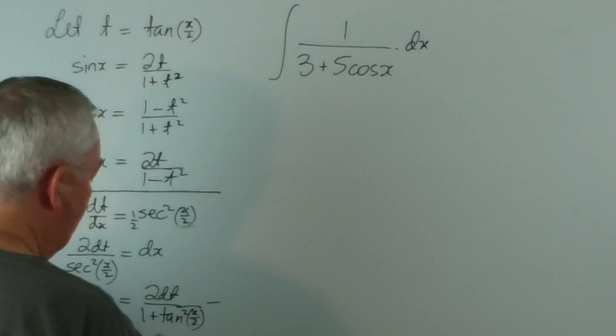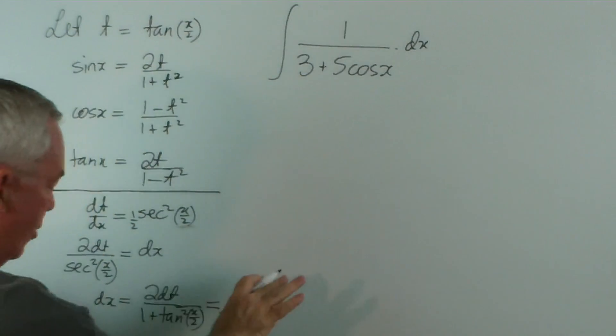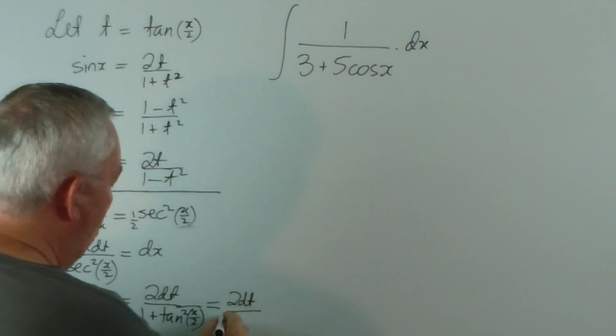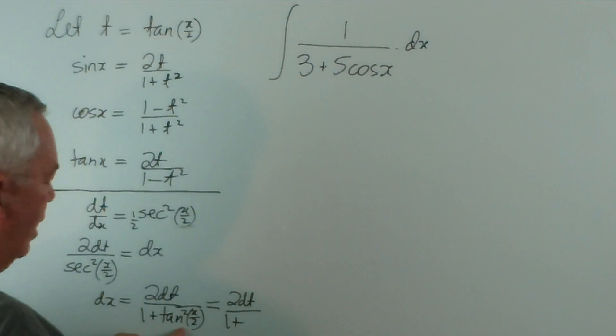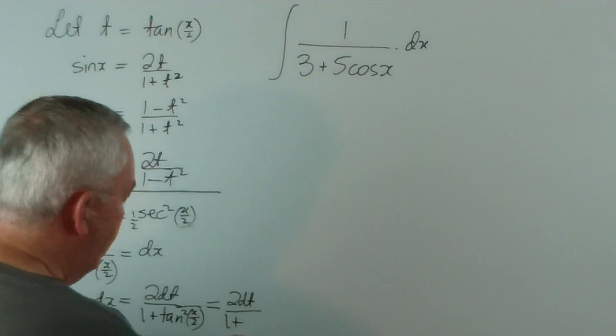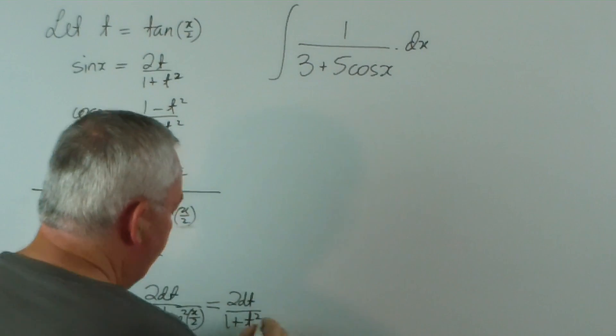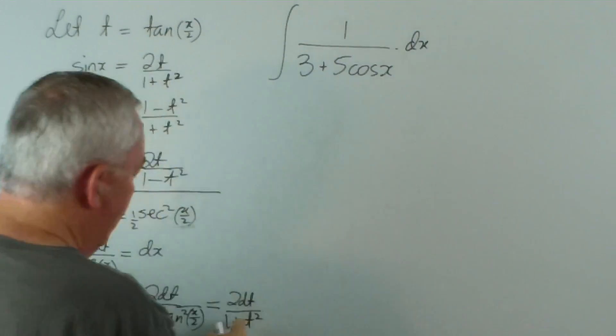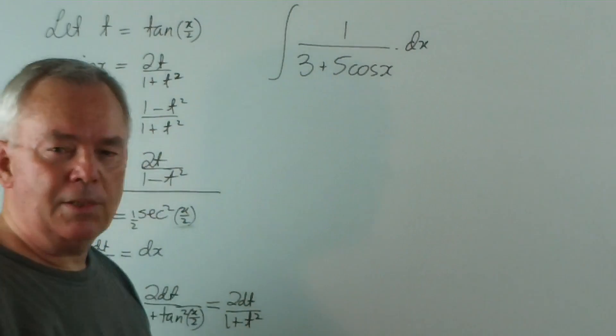And you can see straight away, I think I have run out of the bottom of the board, so I'll go across. This is 2 dt over 1 plus... and tan x/2 is worth t, so tan squared x/2 is t squared. So we can replace our dx up here with 2 dt/(1 + t²).